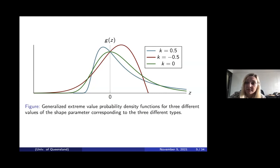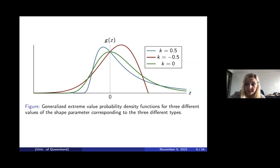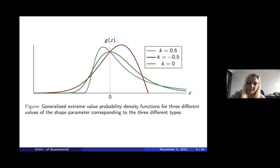When k equals zero we have a Type 1 or Gumbel distribution, which creates exponential tails. When k is positive we have a Type 2 or Frechet distribution, giving polynomial or fat tails. When k is negative we have a bounded tail, called the Weibull or Type 3 distribution. These are the probability density functions corresponding to those three GEV types.